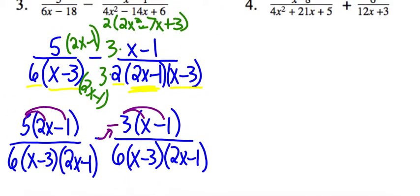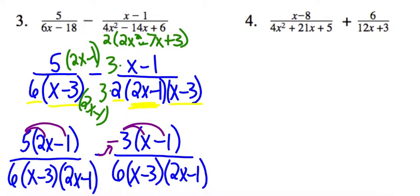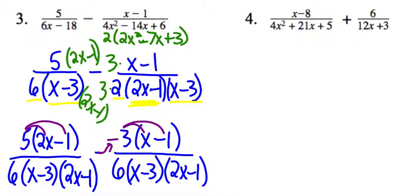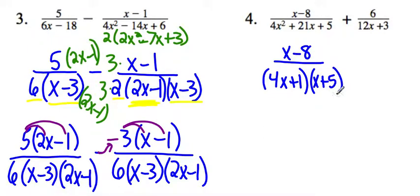Let's take a look at the second one. Okay, we're going to start out the same way, so we're going to factor. On the bottom, you're going to umbrella factor. Start with 4x and 4x and do your umbrella factoring. I'm going to kind of skip that step, but you should end up with 4x plus 1 and x plus 5. And the second one, we can factor out a 3, and that leaves us with 4x plus 1.